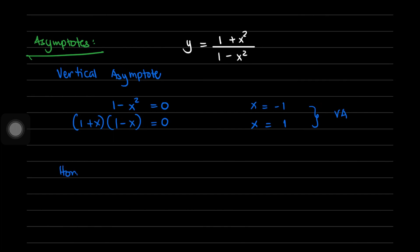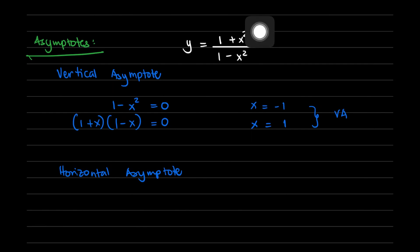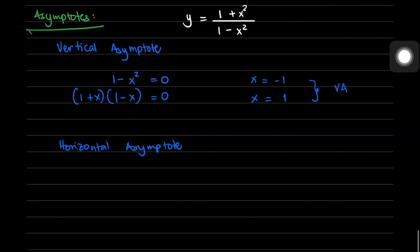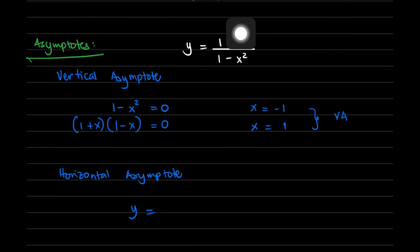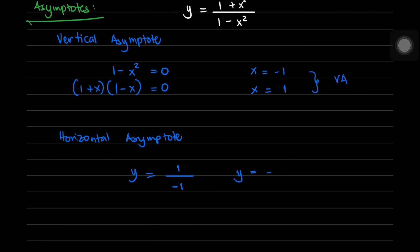For the horizontal asymptote, the degree of the numerator equals the degree of the denominator — both are second degree. The horizontal asymptote is y equals the ratio of the leading coefficients: 1 over -1, which gives y = -1.